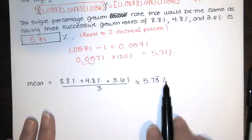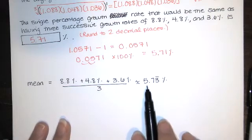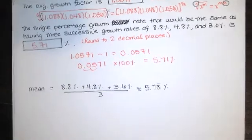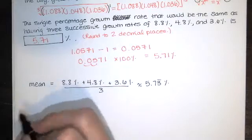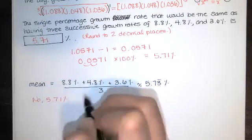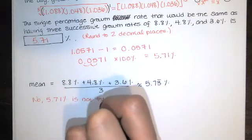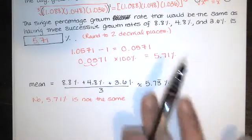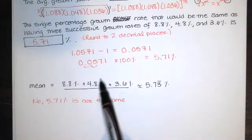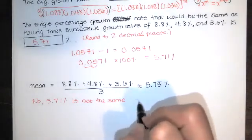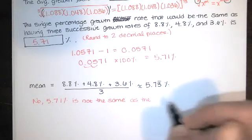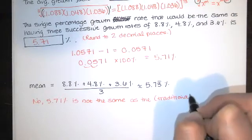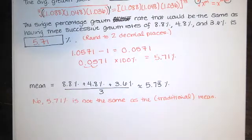And I actually don't know, I forgot to check on this, how many decimal places my lab statistics wants for this answer. But that's the mean, and it is not the same as that 5.71%. No, 5.71% is not the same as the traditional mean, which is called the arithmetic mean, if you prefer. This is the geometric mean, and the other one, this one, it's called the arithmetic mean. So this is the arithmetic mean or the traditional mean. It's usually what we mean when we say mean, if that makes sense.